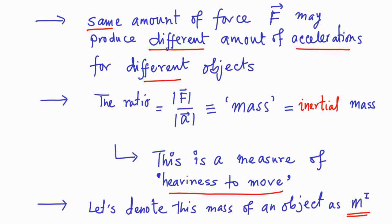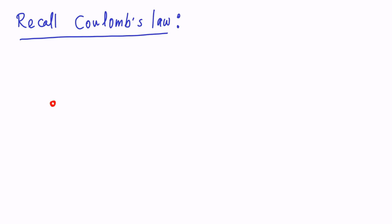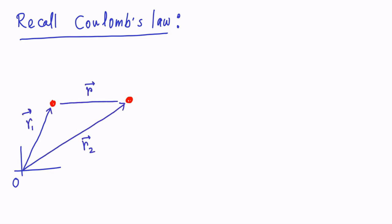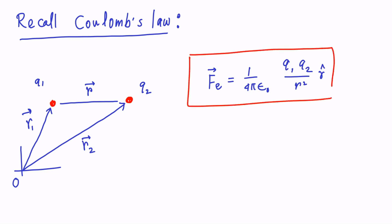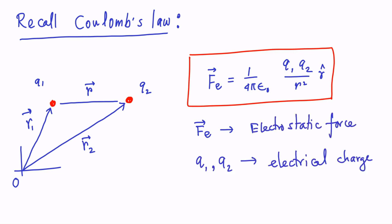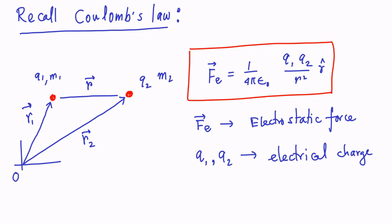Let us now recall Coulomb's law. If you have two charged particles q1 and q2, as shown in this diagram, the position vectors of these two charged particles are given by r1 and r2. Then Coulomb's law says the electrostatic force between these two charges is given by 1 over 4π epsilon-naught times q1 times q2 over r-squared times r-cap, the unit vector along the vector r. Let us also consider these two charged particles have masses m1 and m2 respectively.